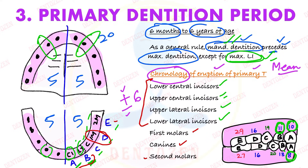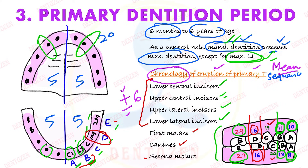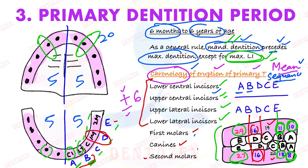The maxillary lateral incisor erupts at eleven months, followed by the mandibular lateral incisor at thirteen months. First molars erupt at sixteen months, canines at nineteen and twenty months, and second deciduous molars at twenty-seven and twenty-nine months. The sequence of eruption — meaning the order in which different types erupt — is A, B, D, C, E for both maxilla and mandible, i.e., central incisor, lateral incisor, first molar, canine, and second molar.